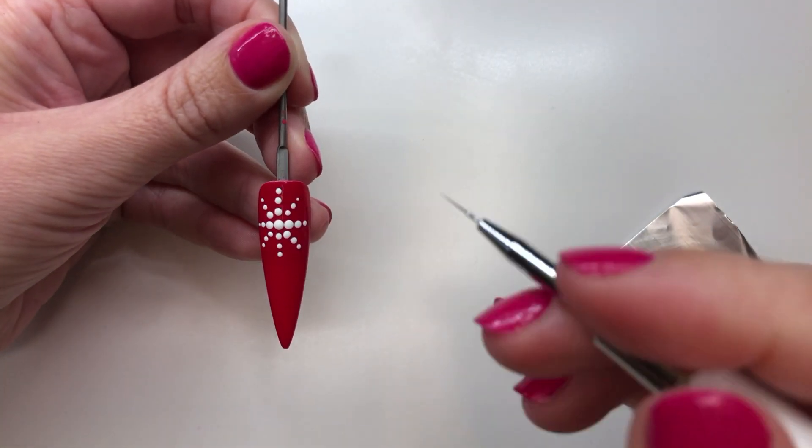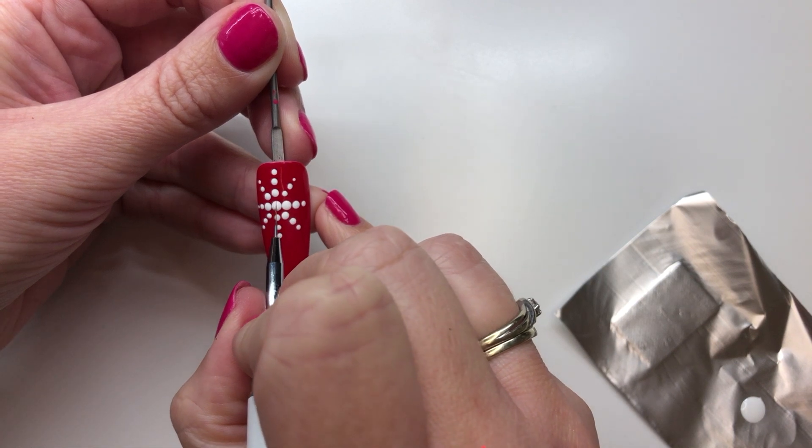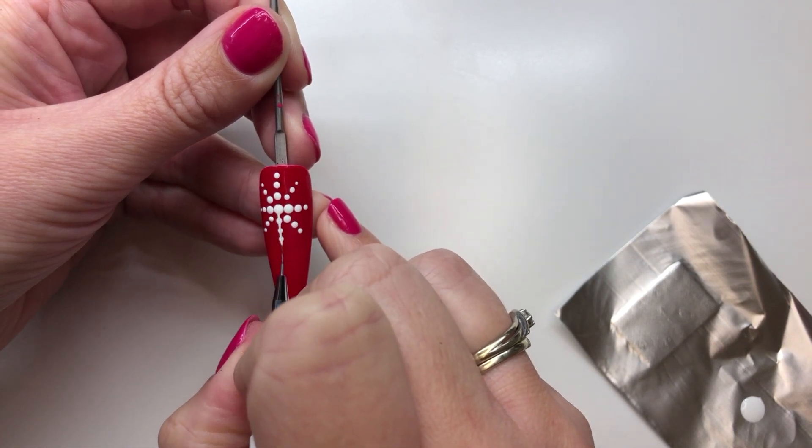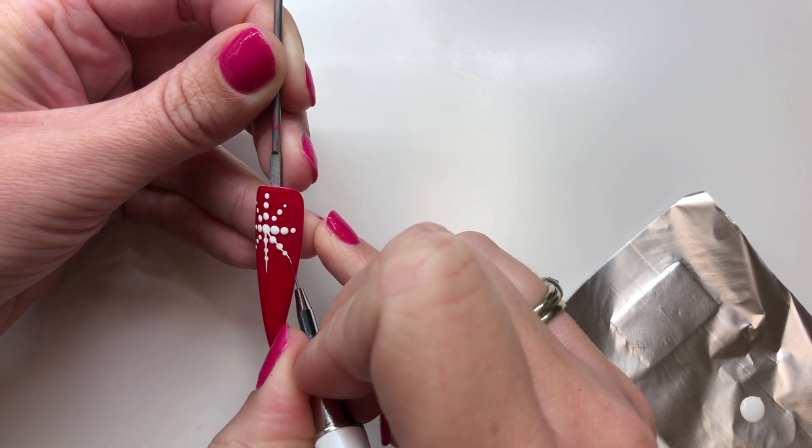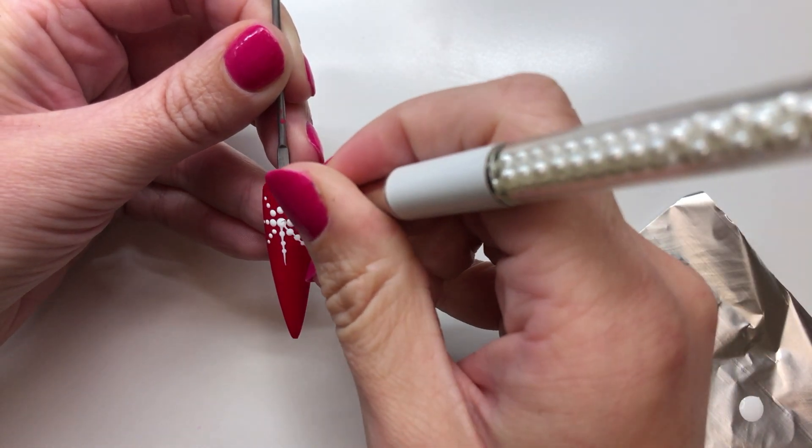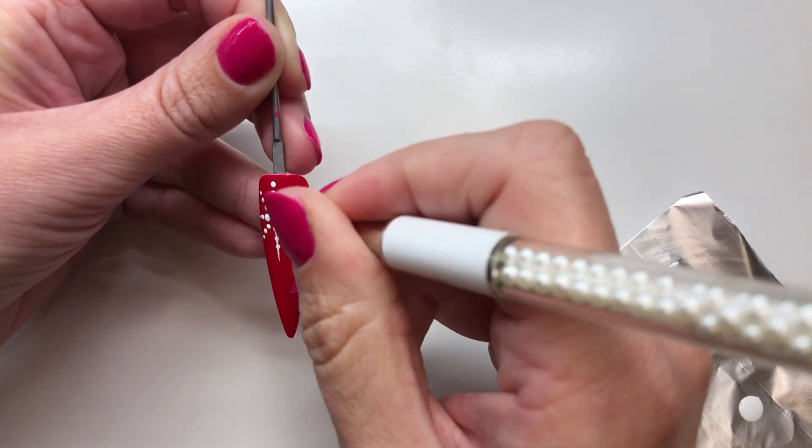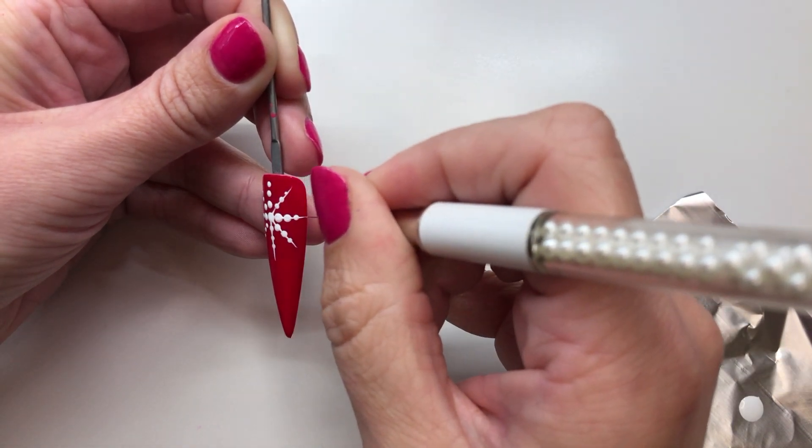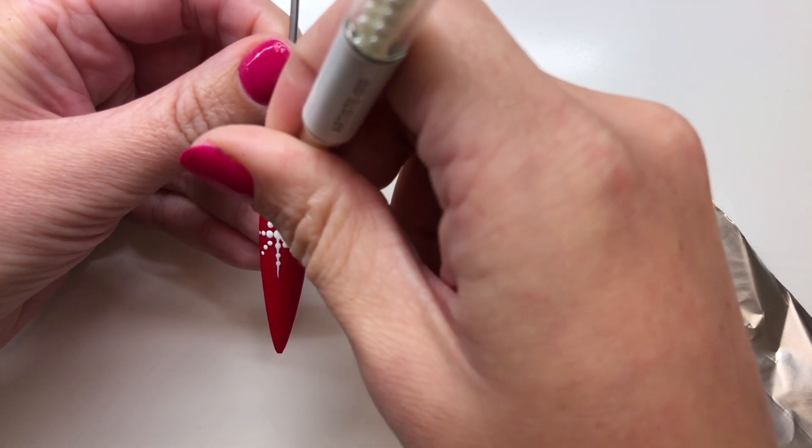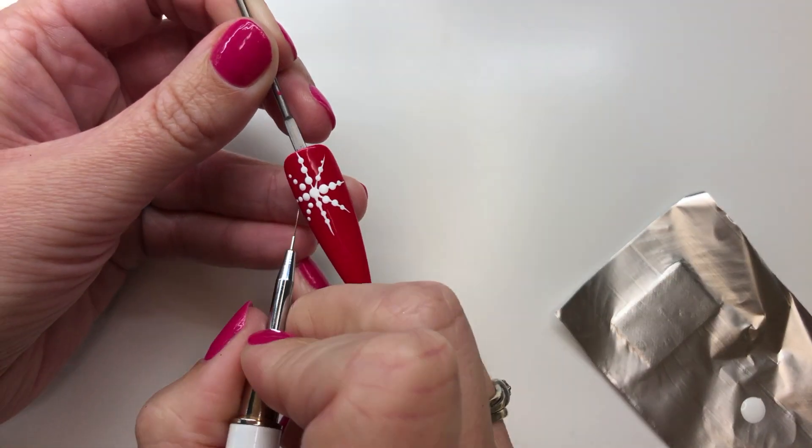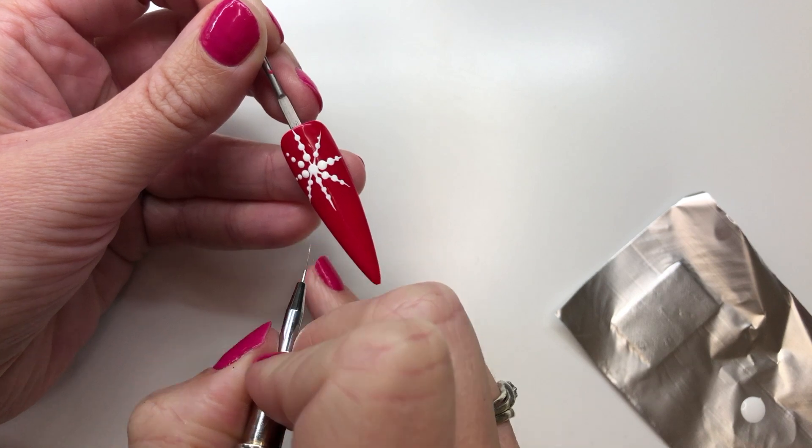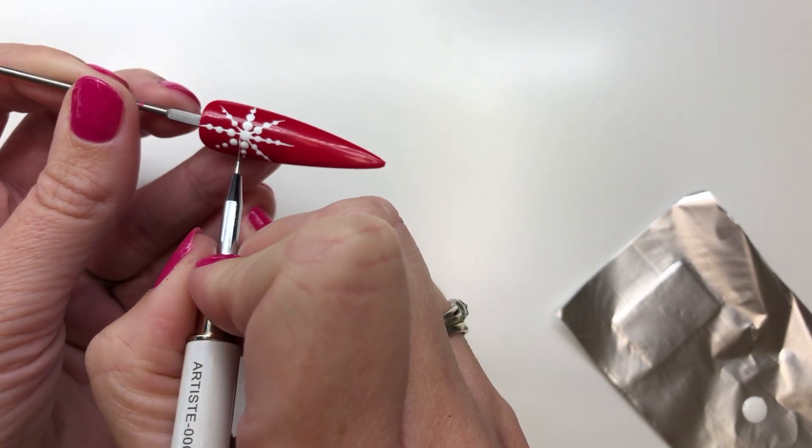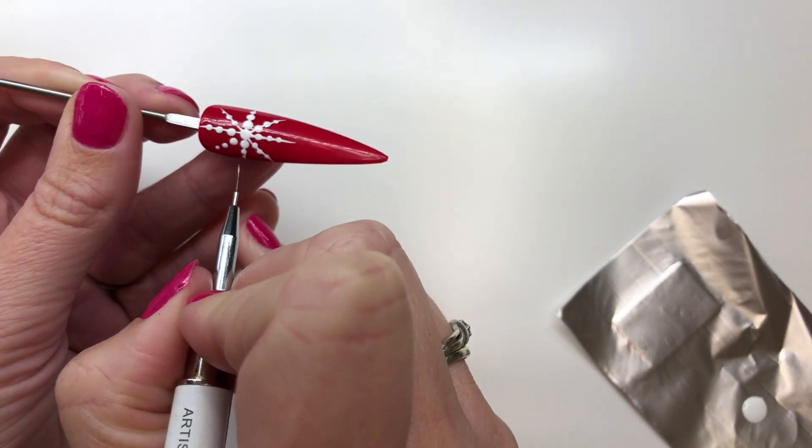Once you put your dots in the order that you'd like them, then you get your artiste brush. Starting from the very middle of your design, drag through each row of dots. By starting in the very center dot and dragging each line outwards, you achieve a really nice design and you finish with a point on each line, making a really nice snowflake shape.